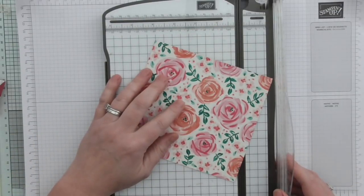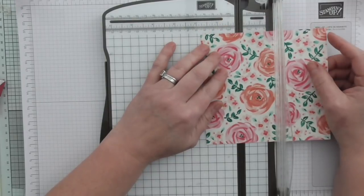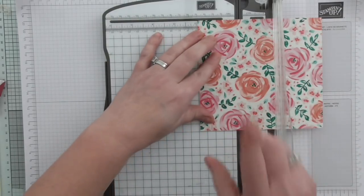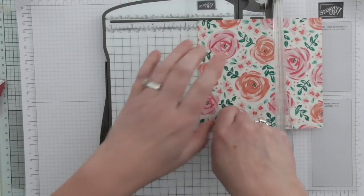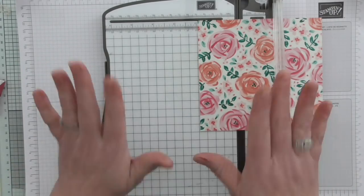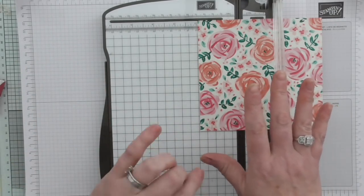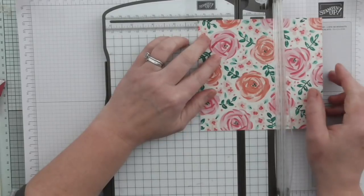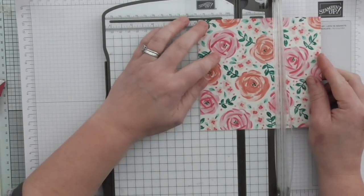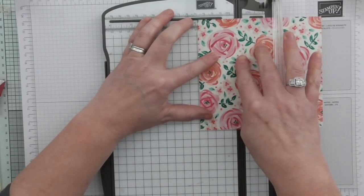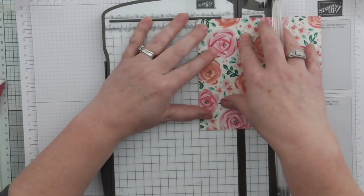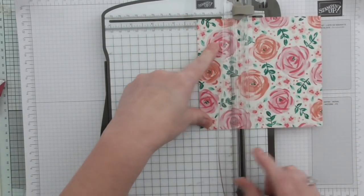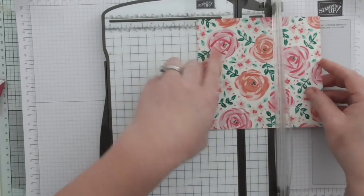On the long side I'm going to score first of all at 1 and 15 sixteenths. Again, if you work in centimeters I will leave the centimeter conversions and the inches and the scores over on my blog at scrimpingmama.co.uk. There is a link in the description box below which will take you straight to this project.